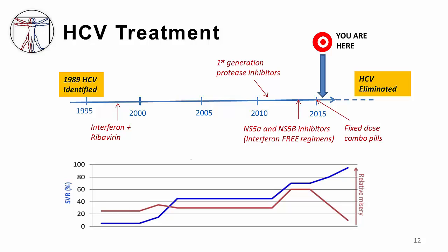By 2015, the co-formulation of many classes of drugs into fixed-dose combination pills makes it possible, in some cases, for patients to take just one pill once per day for as little as eight weeks and achieve a cure of their hepatitis C virus.